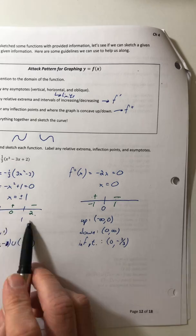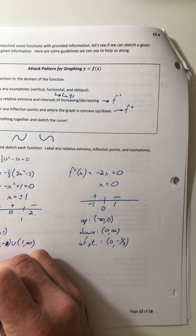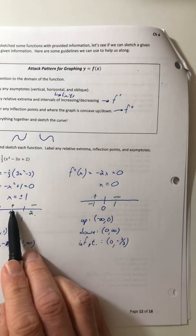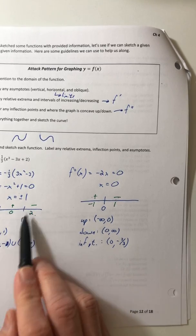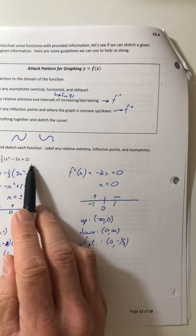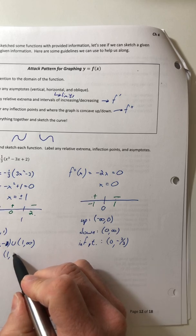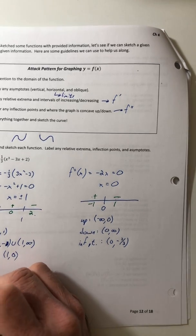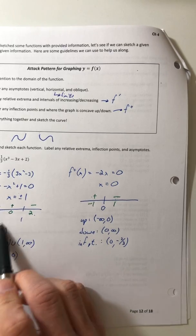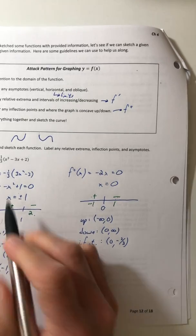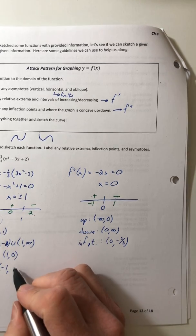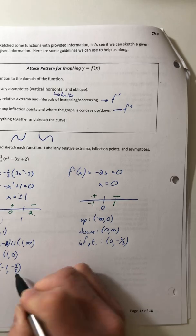So I totally forgot to get the extrema. So your relative max is when it switches from positive to negative. So when x is one, you plug that back into your function, and it comes out as a zero. You got a relative min at your negative one, plug that back into your function, and it comes out as a negative four thirds.